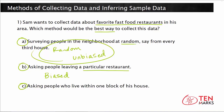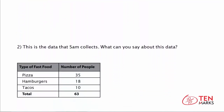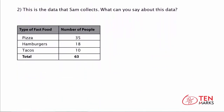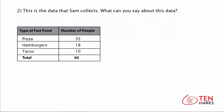Now let's take a look at the data that Sam collects and make some inferences about the favorite restaurants in his neighborhood. Looking at the numbers, you can see that most people in Sam's sample like pizza, because the greatest number of people say that pizza is their favorite type of fast food. Also, the least number of people like tacos, as shown with the number 10, and you can infer that the least number of people in the neighborhood like tacos.